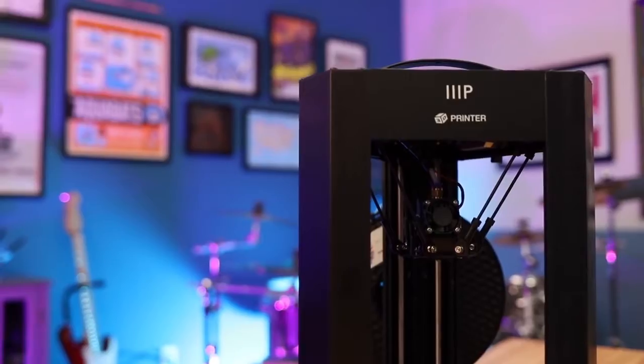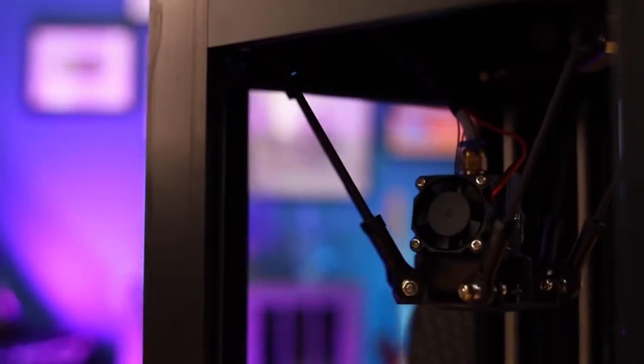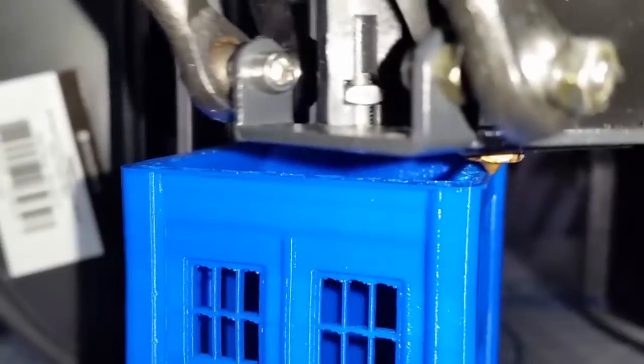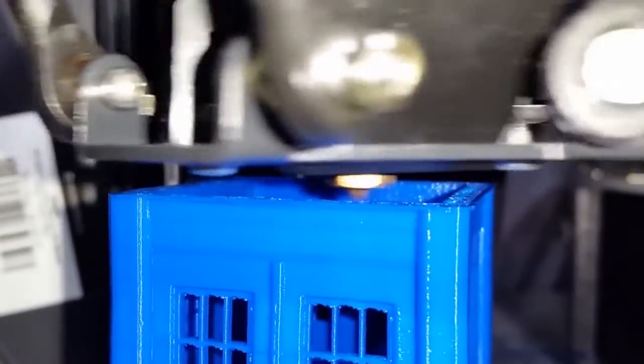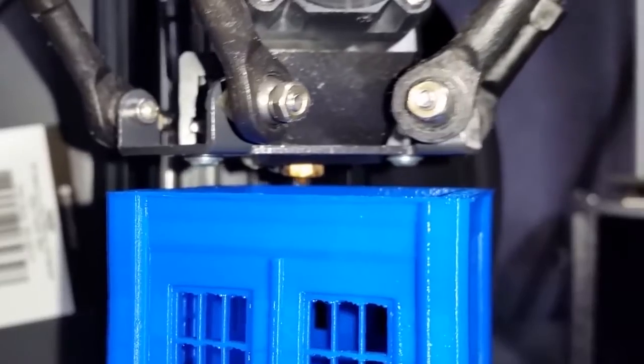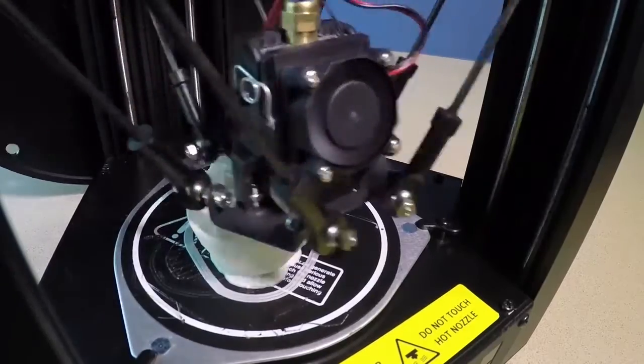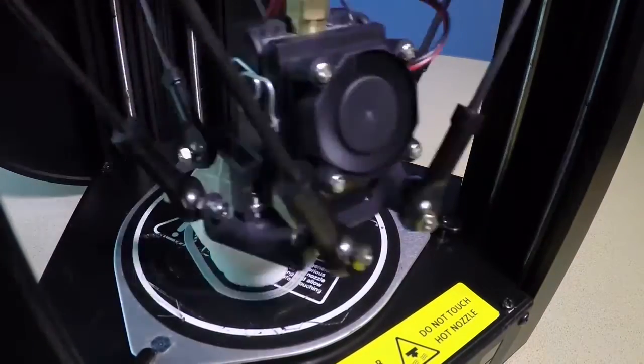You might not think a budget printer like the Mini Delta would have great print quality, but it's true. By lowering the print speed, you can drastically improve your models. In fact, at the slowest setting, we found that the layers were far harder to discern, and there were far fewer excess strands of filament hanging off.